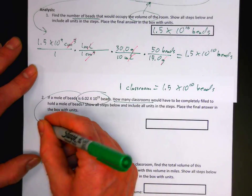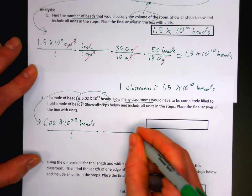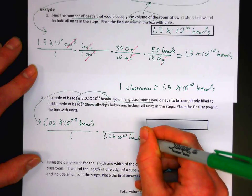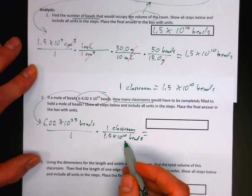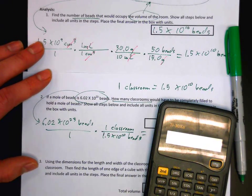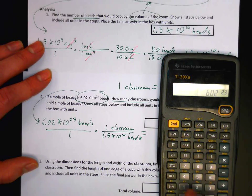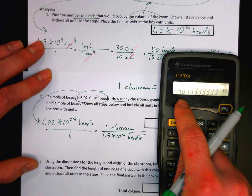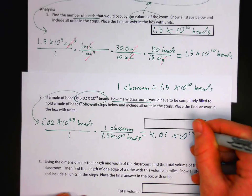We're going to start with 6.02 times 10 to the 23rd beads. We can use this equality to make a conversion factor: for every 1.5 times 10 to the 10th beads, there is one classroom. We're essentially dividing the total number of beads by the number of beads in one classroom. So 6.02 times 10 to the 23rd divided by 1.5 times 10 to the 10th comes out to 4.01 times 10 to the 13th classrooms.